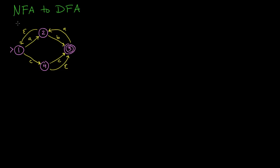We're going to convert a non-deterministic finite state automaton to a deterministic finite state automaton in this video. This state diagram is non-deterministic because of these epsilon transitions. If I was sitting in state number two, I wouldn't know whether to follow the B transition or jump to state number one through the epsilon transition, unless I could somehow look ahead in the input. Since I can't do that, that makes this non-deterministic. I'm going to show you how to convert this to a deterministic one by getting rid of these epsilon transitions.